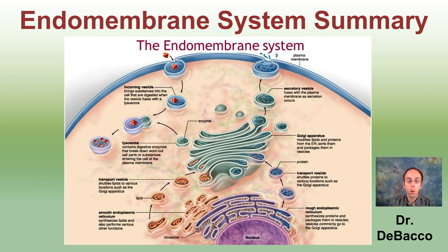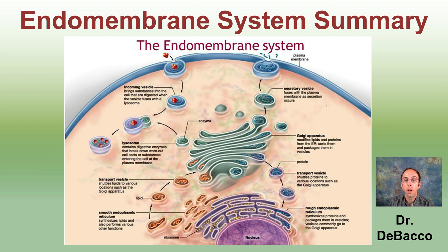We start in the nucleus and work our way through the rough and smooth ER. We have transport vesicles, then go to the Golgi, ultimately forming vesicles that will either leave the cell or enter the cell where enzymes break things down. This whole system is a way that the nucleus, containing its DNA, helps regulate processes for things being secreted from the cell or things being broken down that enter the cell.